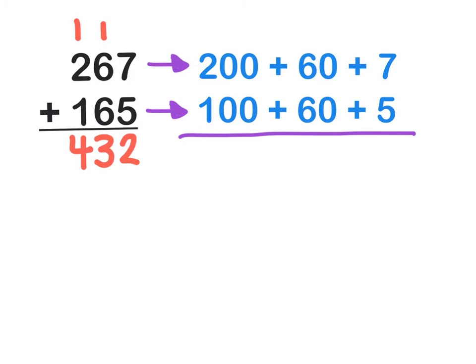We know that 200 plus 100 equals 300. We also know that 60 plus 60 equals 120, and 7 plus 5 equals 12.